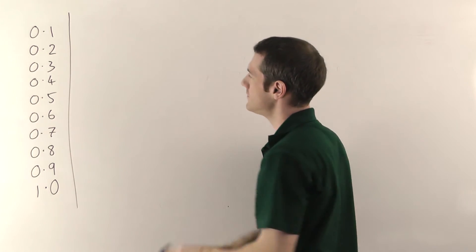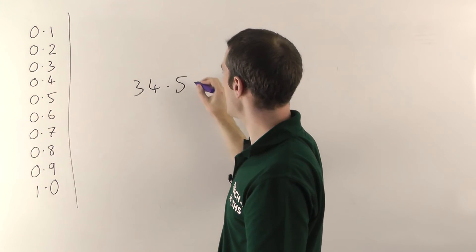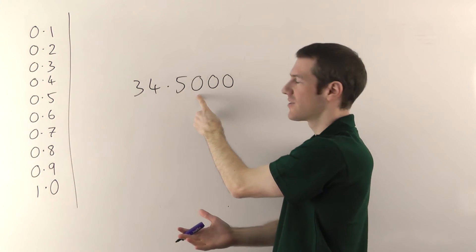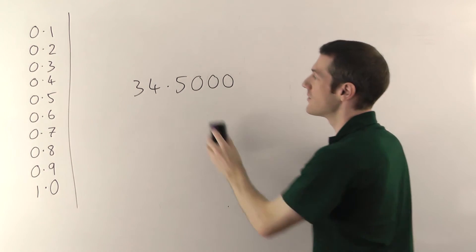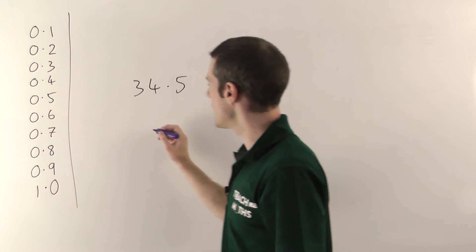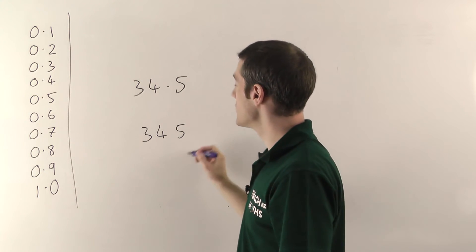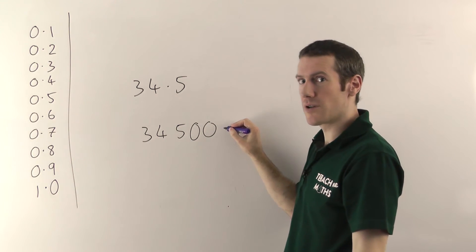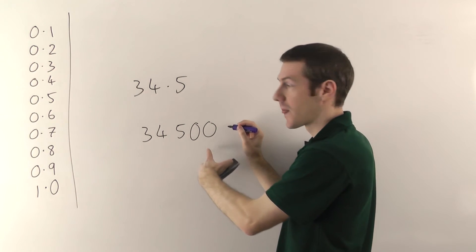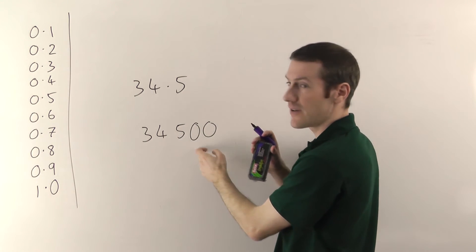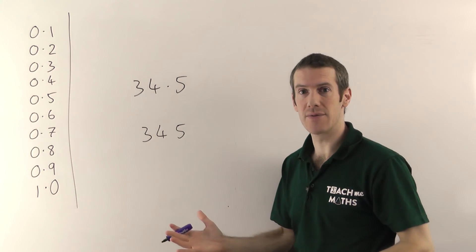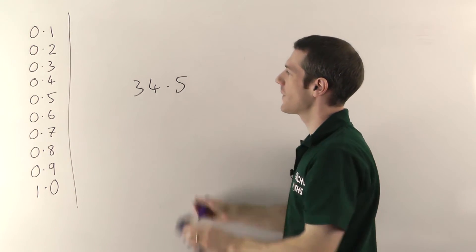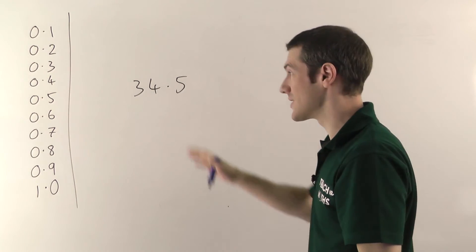Just quickly on that point: if I have a number like 34.5000, I've got 5 tenths, but then no hundredths, no thousandths, no ten-thousandths — you don't need any of those. You never need zeros on the end after the decimal. But if you have a number like 34,500, those zeros on the left of the decimal point you do need — because this is 34,500. If I get rid of them, suddenly it's 345, which is not the same number. So zeros on the end of a decimal number you don't need; but zeros to the left of the decimal point you must keep, as they maintain the place value of everything else.